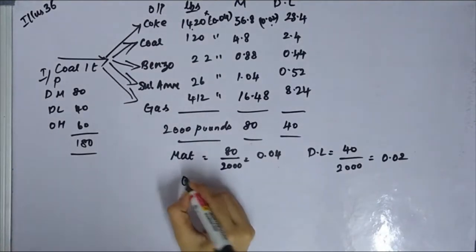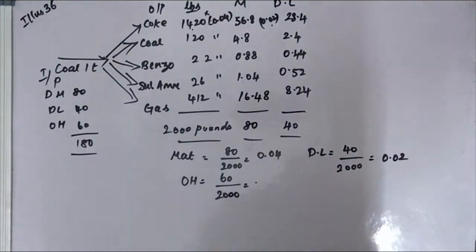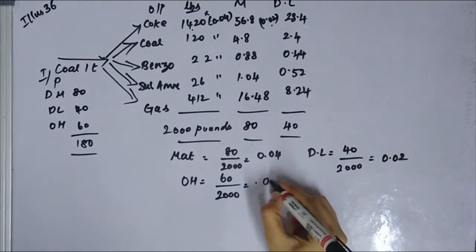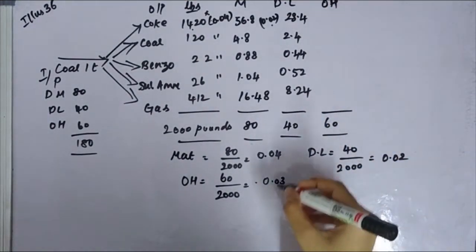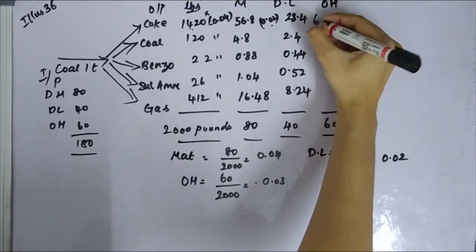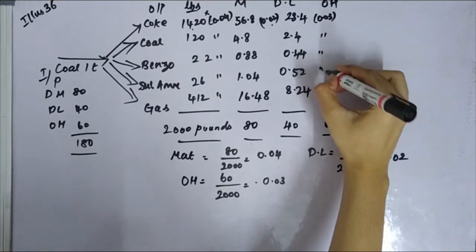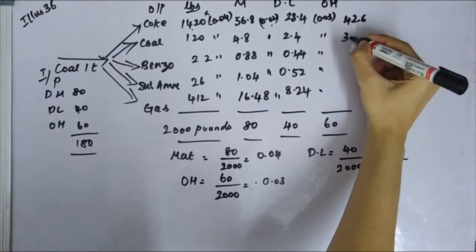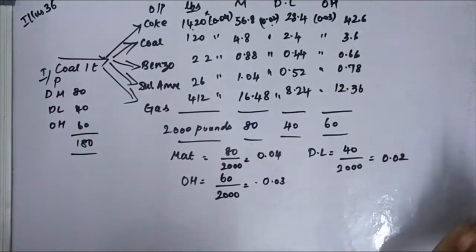Next is overheads. Overheads are 60 rupees per ton. Dividing 60 by 2000 gives 0.03 per lb. Multiplying by each product's output: coke 42.6, coal tar 3.6, benzol 0.66, sulphate of ammonia 0.78, gas 12.36 — totalling 60.